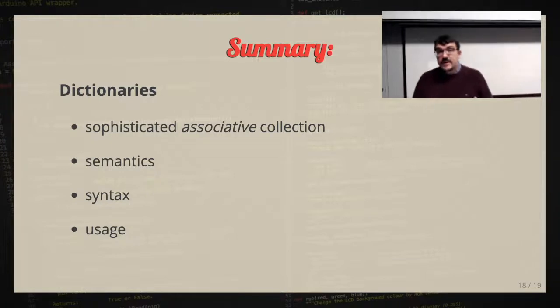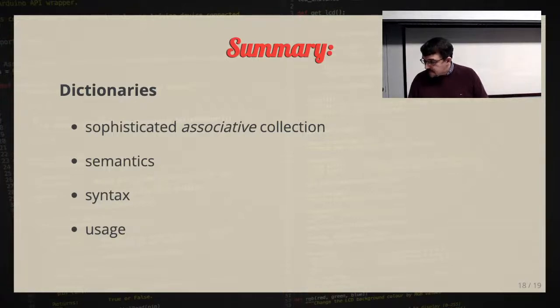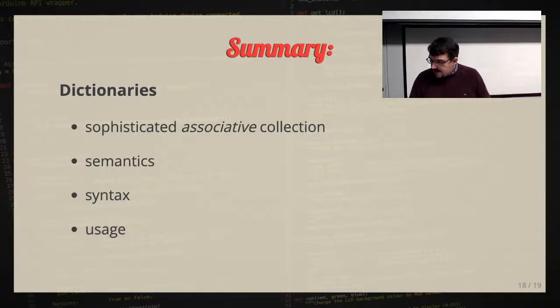To summarize: dictionaries are associative — they associate a value with a key, allowing lookup by name rather than by position. We can iterate over keys, values, or items. The main power is grabbing things by their name, as long as that name is immutable. You may find them very useful in project work. If you have a specific question about your assignment, feel free to send an email. That's it for today — see you on Monday.